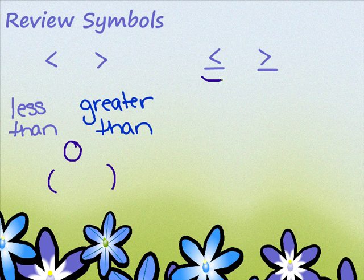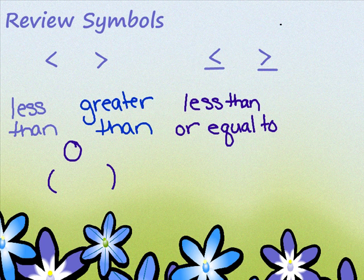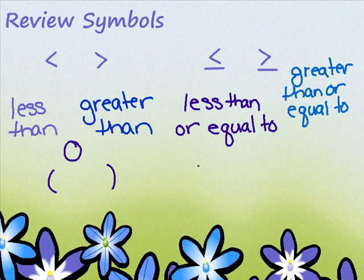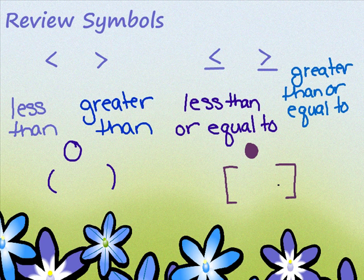Let's look at the next set. This actually means less than or equal to, and this means greater than or equal to. When we put that on the number line, it's going to be a closed circle because it can equal that number. Or we're going to use brackets, and these are really used in our interval notation — I'll show you how in the next step.